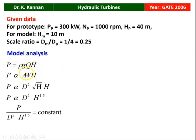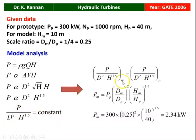Doing the model analysis: power equals ρGQH. Since ρ and G are constant, power is proportional to Q and H. Discharge depends on area and velocity, so discharge is replaced by area (π/4 D²) and velocity (√(2GH)). Thus power is proportional to D² × √H × H, which gives power proportional to D² × H^1.5. Rearranging: P/(D² × H^1.5) = constant, applied to model and prototype. So power of model equals power of prototype × (D_M/D_P)² × (H_M/H_P)^1.5 = 300 × (0.25)² × (10/40)^1.5 = 2.34 kilowatt. That is the answer.